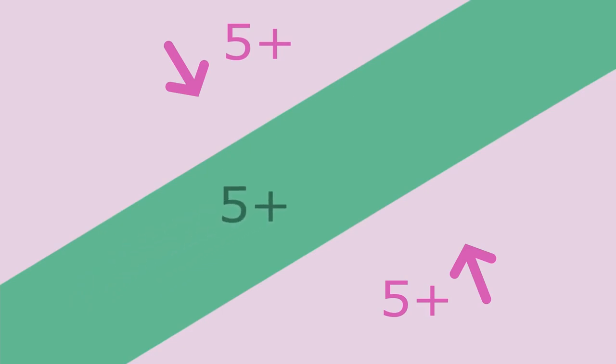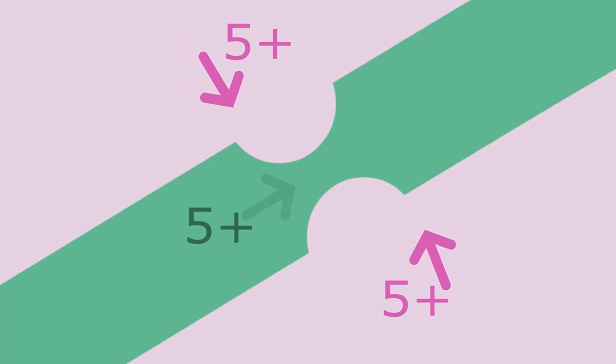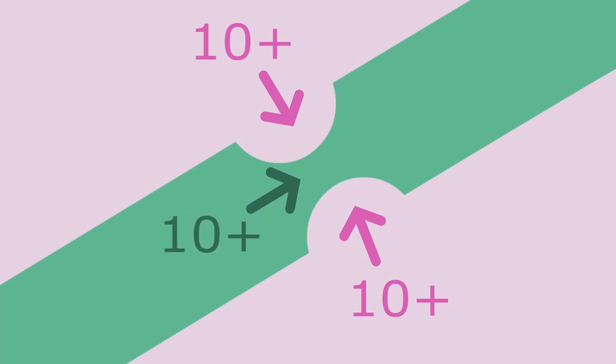Once we achieve the equal pressure point, it doesn't really matter if we add more force to our expiration, because while we increase the intraluminal pressure, we also increase the dynamic compression pressure. Therefore, the flow of air is only dependent on the natural recoil of the lung.